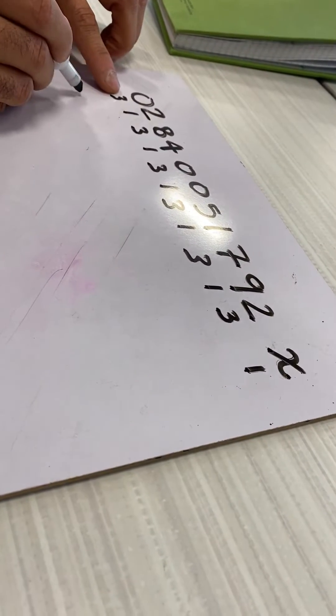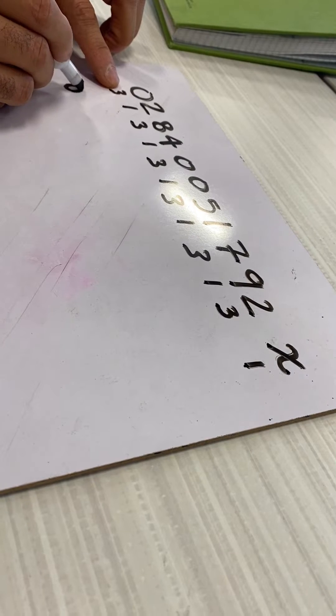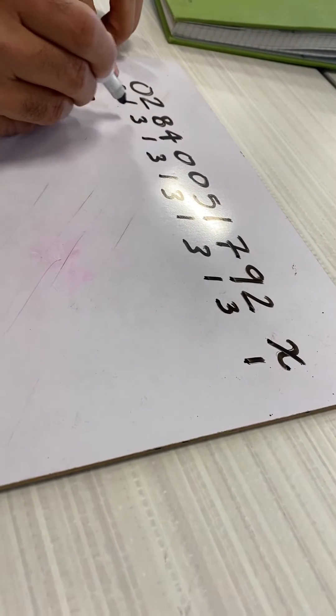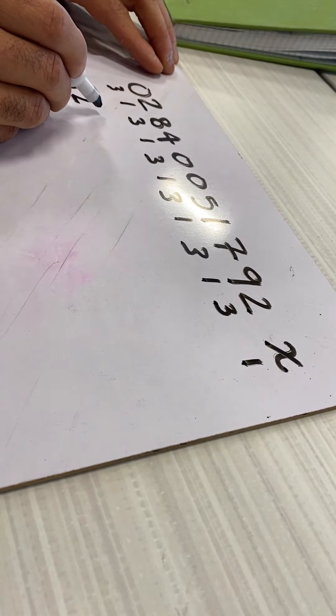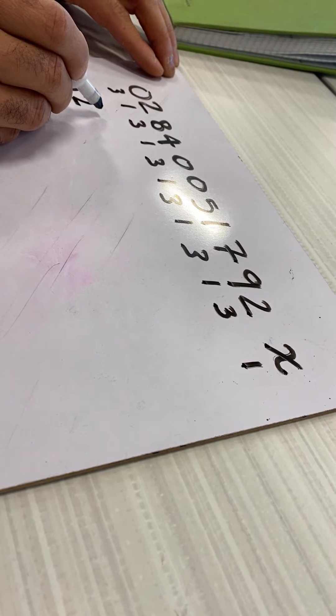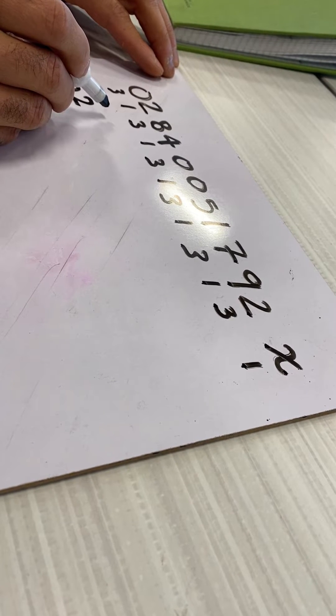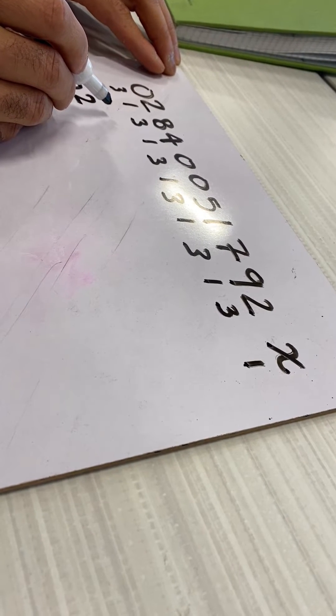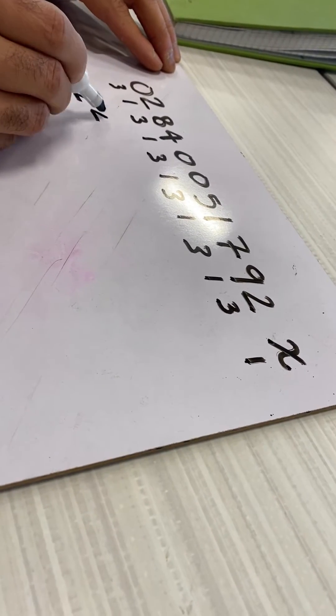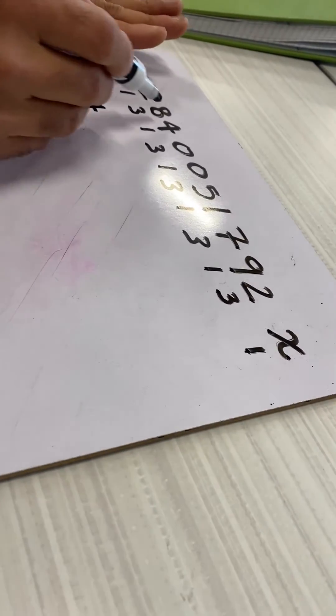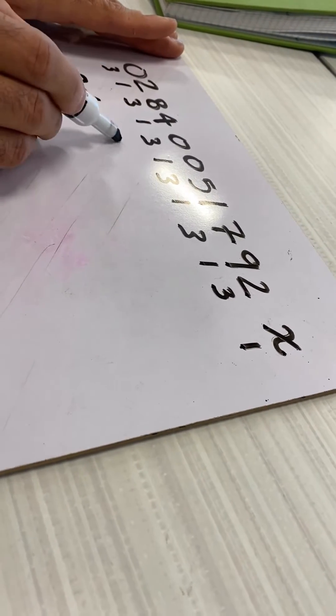Zero times three, zero. Two times one, two. Eight times three, 24. So we put the four, and we carry the two. Okay, four times one, four, zero.